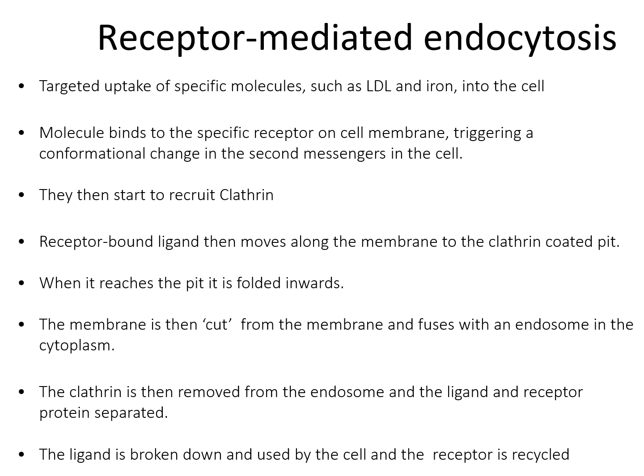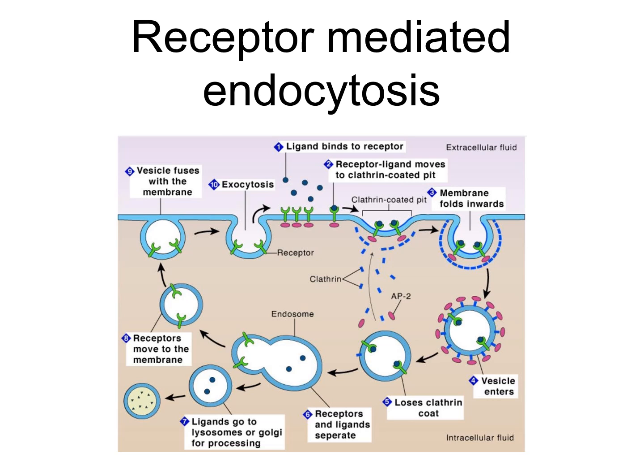Here is a diagram of receptor-mediated endocytosis: the ligand binds the receptor; the receptor-ligand complex moves to a clathrin-coated pit; the membrane folds inwards forming a vesicle; the clathrin coat is lost; the receptor and ligand separate; the ligands go to the lysosomes or Golgi apparatus for processing; the receptors return to the membrane; and the vesicle fuses with the membrane, completing endocytosis.